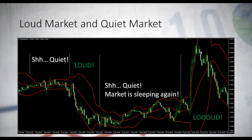The price starts to slow down, tests the upper band as a resistance, and bounces from it in a bearish direction. This is when the Bollinger Band indicator gives you an overbought signal — when the price is unusually high, the price enters a bearish trend and gets back to normal step by step.